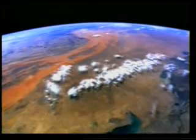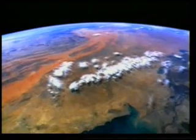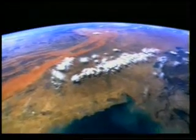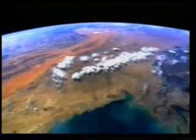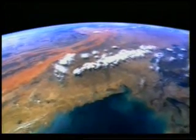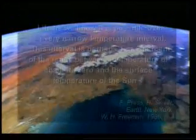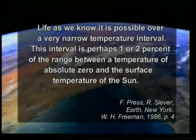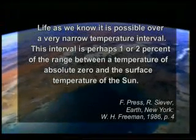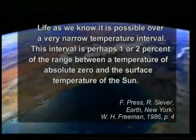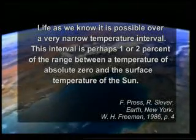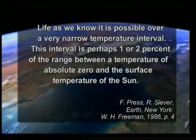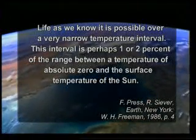The American geologists Frank Press and Raymond Siver draw attention to the average temperatures prevailing on Earth. They note that life as we know it is possible over a very narrow temperature interval — perhaps one or two percent of the range between a temperature of absolute zero and the surface temperature of the Sun.